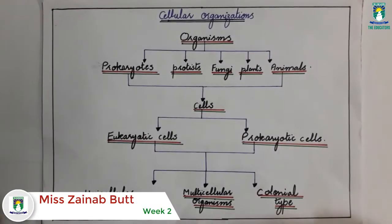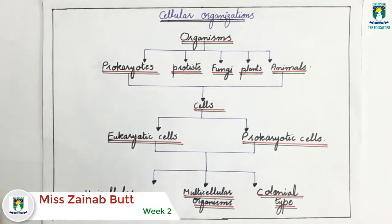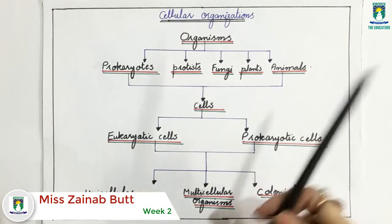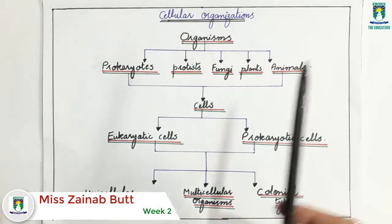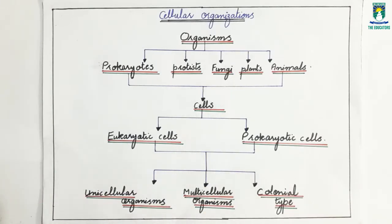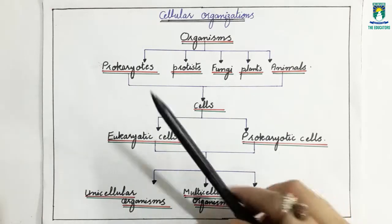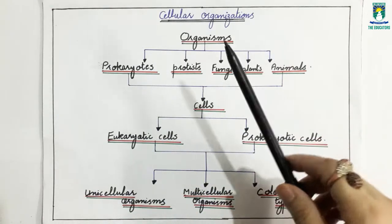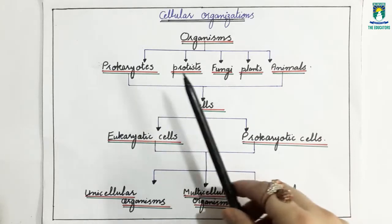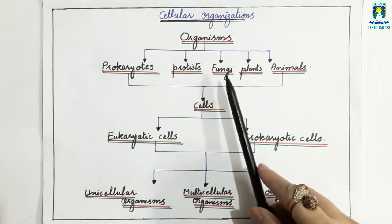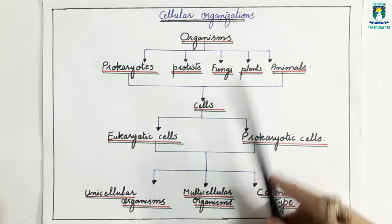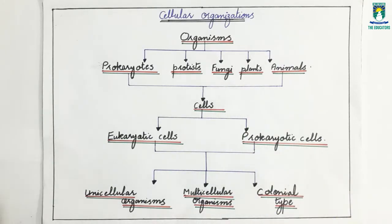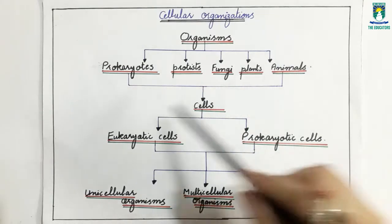Bismillahirrahmanirrahim, Assalamu Alaikum students. As you know, we are discussing class 9th biology, chapter number 1, introduction to biology. The next topic from this chapter is cellular organization. As you know, all organisms have been divided into five major groups: first prokaryotes, second protists, third fungi, fourth plants, and fifth animals.